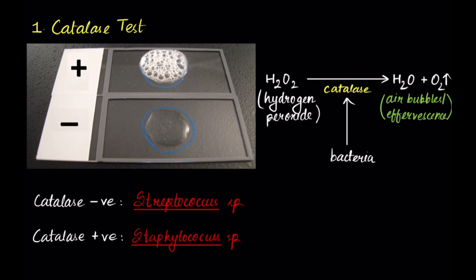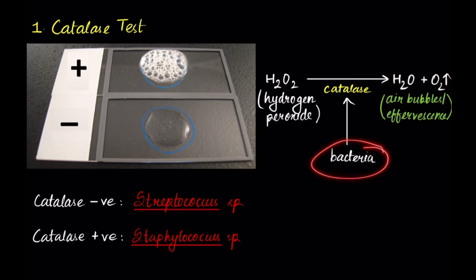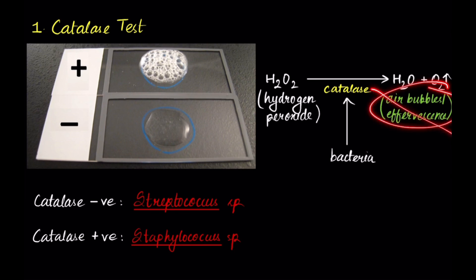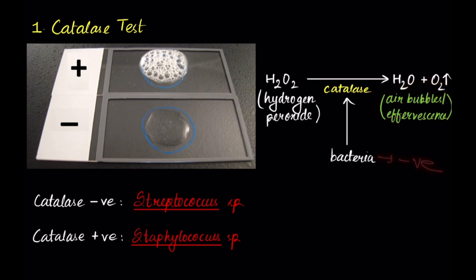If a change is observed, that means the bacteria shows a positive test. But if the change is not observed, that means the bacteria shows a negative test. Now let's look at the various biochemical tests.